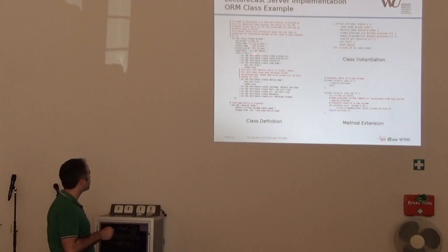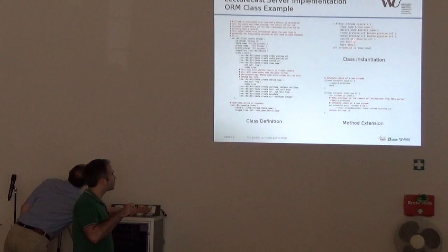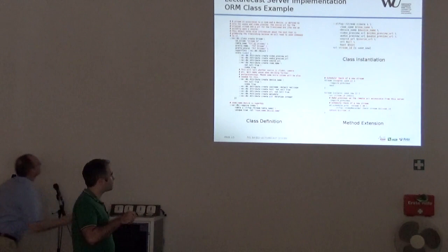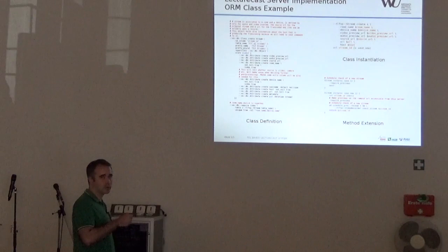This is an example of class definition. Here we define the stream class. As you can see, it's composed of various attributes - the video preview URL, the audio preview URL, the device name, the room name, etc. Here is an example of class instantiation. As you can see, it's very simple. We just create an object, assign the properties, and then we save it. That's it. Of course, methods can be extended. This is the normal save operation which is extended by a method requiring the previews to be generated and then passing to the super constructor, more or less equivalent to the super constructor in the Java language.